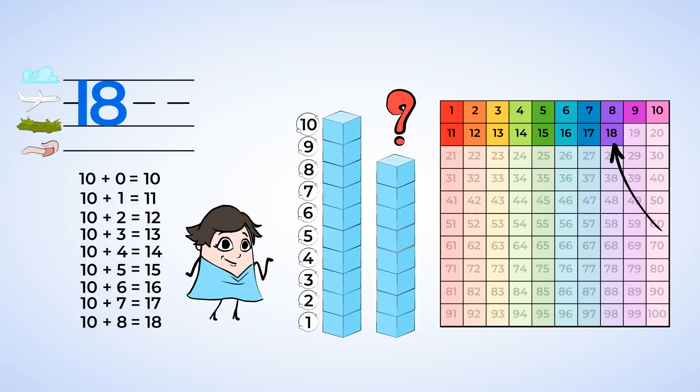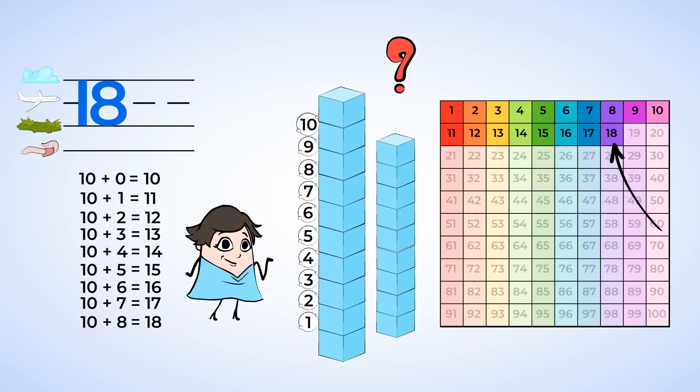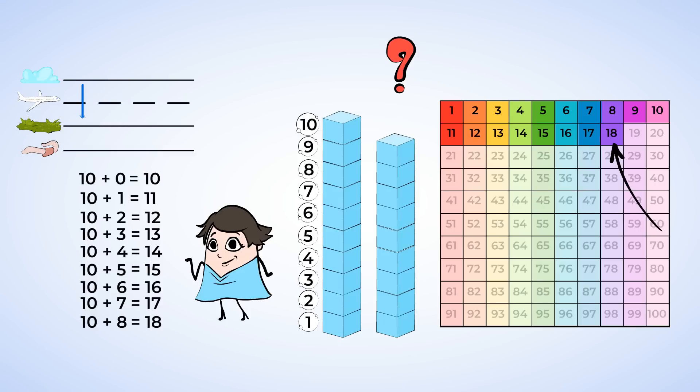And yes! Mia is adding another block. Now we have a tower of 10 and 9 more. Write a 1 and a 9. Loop up high, down from the sky. 10 plus 9 equals 19.